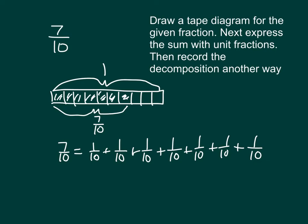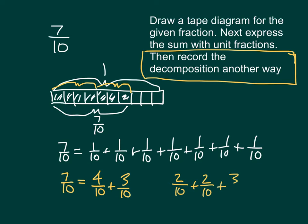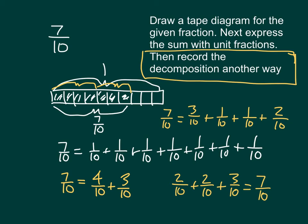Now for the next part, it says to record the decomposition another way. We could use our tape diagram to help us — we could start labeling it as this part and this part. That would be four-tenths with three-tenths. Seven-tenths does equal four-tenths plus three-tenths. Is there another way? I could go two-tenths plus two-tenths plus three-tenths, which equals seven-tenths. Or three-tenths plus one-tenth plus one-tenth plus two-tenths. There are a number of ways to write that decomposition.